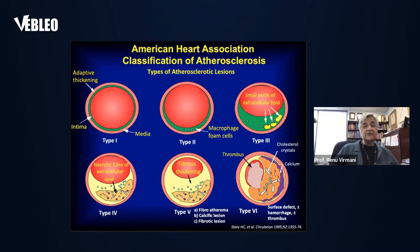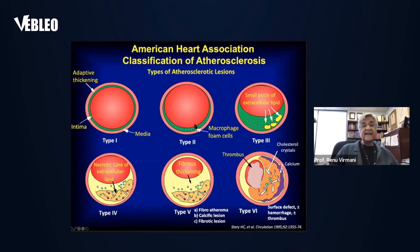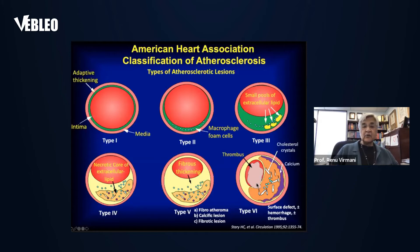This is a diagram showing what we know from the American Heart Association and our own work about how plaques progress. When we're born, we have just intimal thickening in about 30% of us, known as adaptive intimal thickening. Type 2 is also known as fatty streak or intimal xanthoma. Type 3 is pathologic intimal thickening. Type 4 is a fibroatheroma, which has a necrotic core. Type 5 is a markedly thickened fibrous cap. Type 6 is when we start seeing thrombus and necrotic core rupture with a thin overlying fibrous cap.